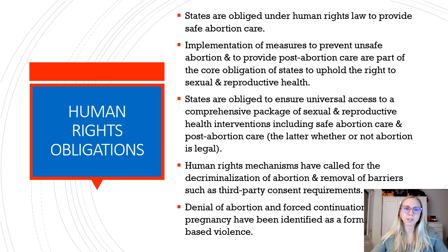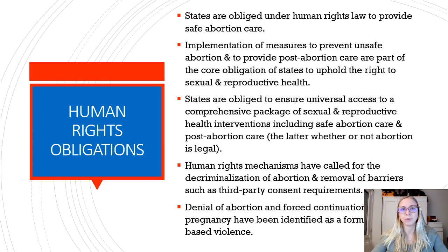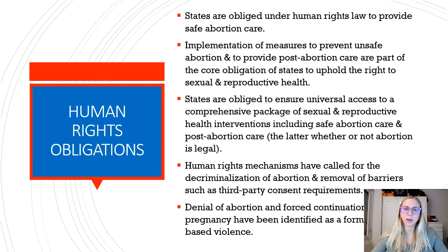This slide presents the human rights obligations of member states related to safe abortion care. States are obliged under human rights law to provide safe abortion care. Implementation of measures to prevent unsafe abortion and to provide post-abortion care are part of the core obligation of states to uphold the right to sexual and reproductive health. States must ensure universal access to a comprehensive package of sexual and reproductive health interventions, which includes safe abortion care and post-abortion care — the latter whether or not abortion is legal. Additionally, human rights mechanisms have called for the decriminalization of abortion and the removal of barriers such as third-party consent requirements. Finally, denial of abortion and forced continuation of pregnancy have been identified as a form of gender-based violence.